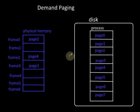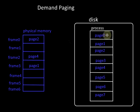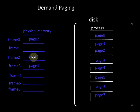In the last video we saw the technique of virtual memory using demand paging. Demand paging is the technique in which we start execution of a process by keeping only some of the pages of the process in the physical memory — those expected to be used right away — while the remaining pages are kept on disk and brought to physical memory only on demand.